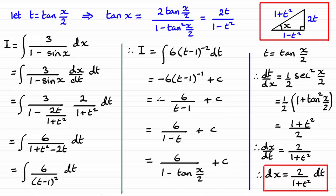So using the Weierstrass substitution t = tan(x/2) has made this integral a lot easier to do. That's the first video in this series. In another video I'll show how to handle a harder example where partial fractions are involved. Thanks for watching and I hope that's been of some use to you.